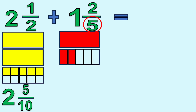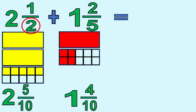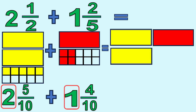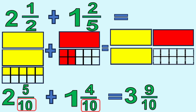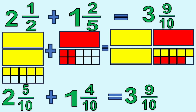Next, cut the second model again horizontally by 2 because the denominator of the first figure is 2. The figure is now cut into 10 parts, giving us 1 and 4 tenths. We can add now because the denominators are already the same. Add first the 2 whole numbers: 2 plus 1 equals 3. Then add the numerators: 5 plus 4 equals 9. Copy the denominator 10. So the final answer is 3 and 9 tenths.